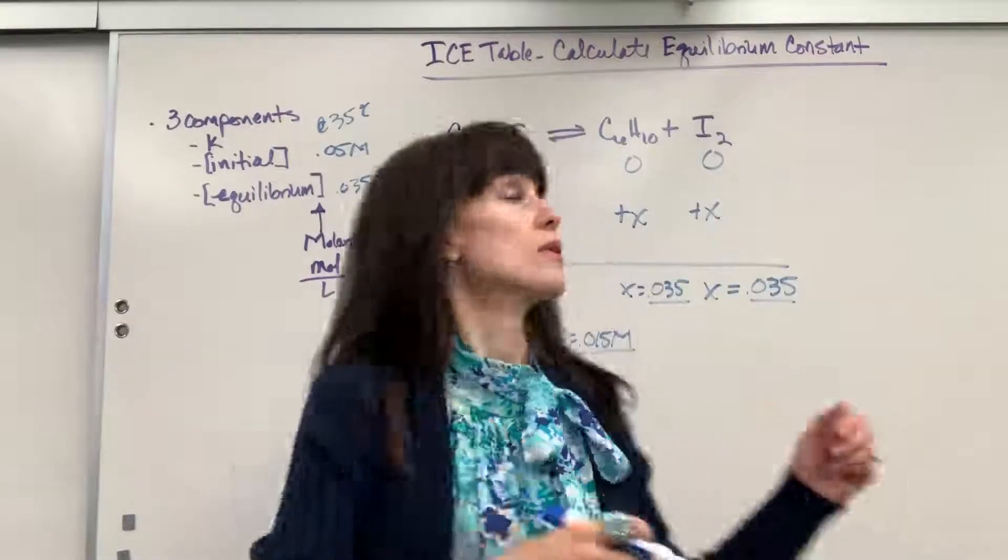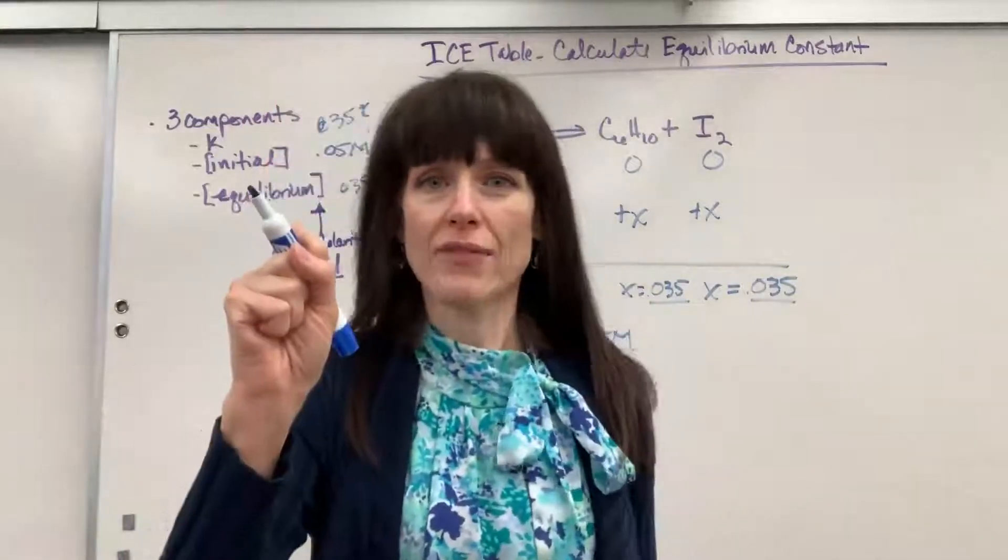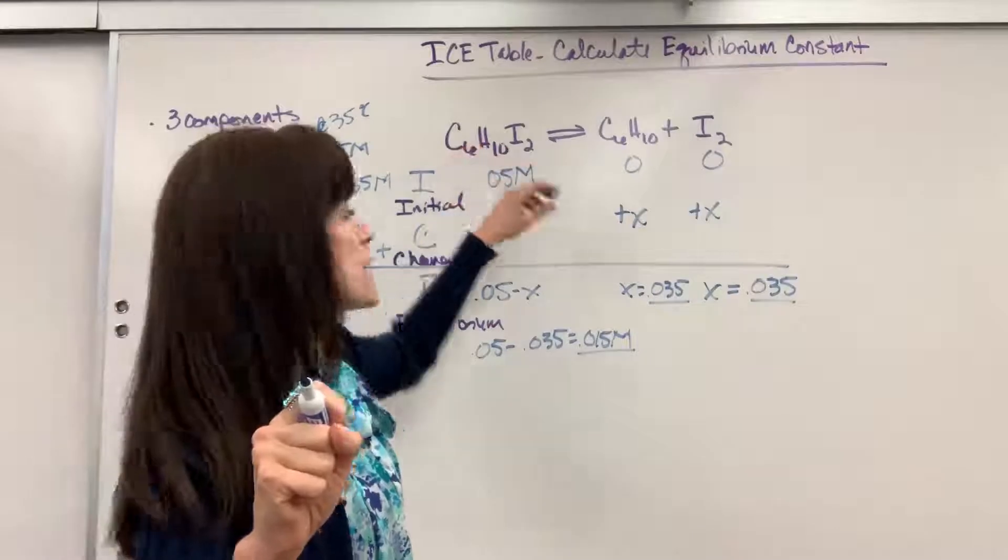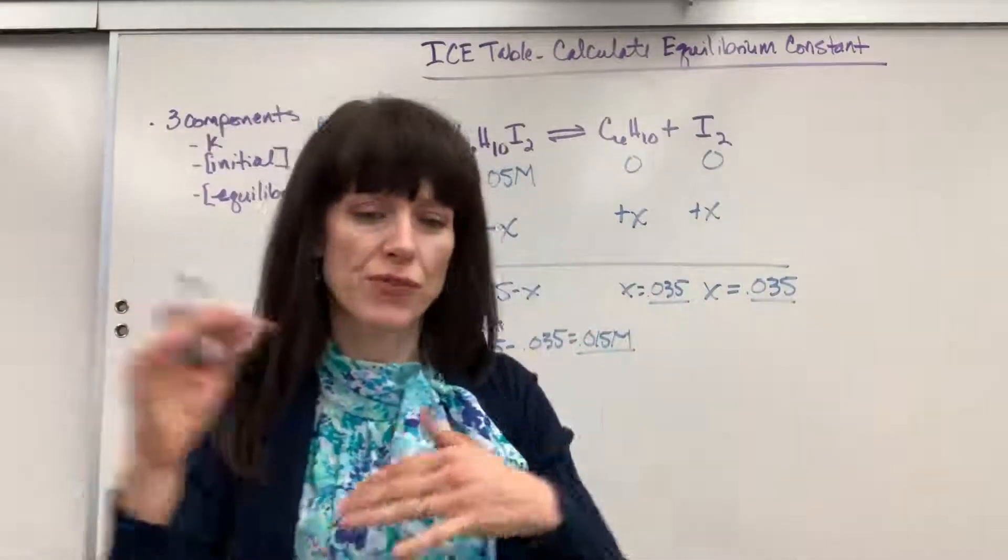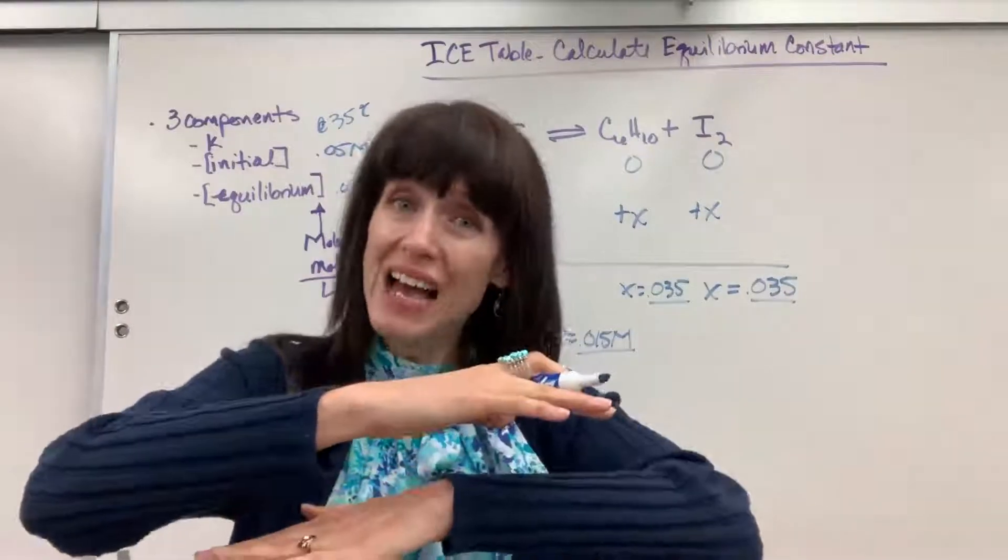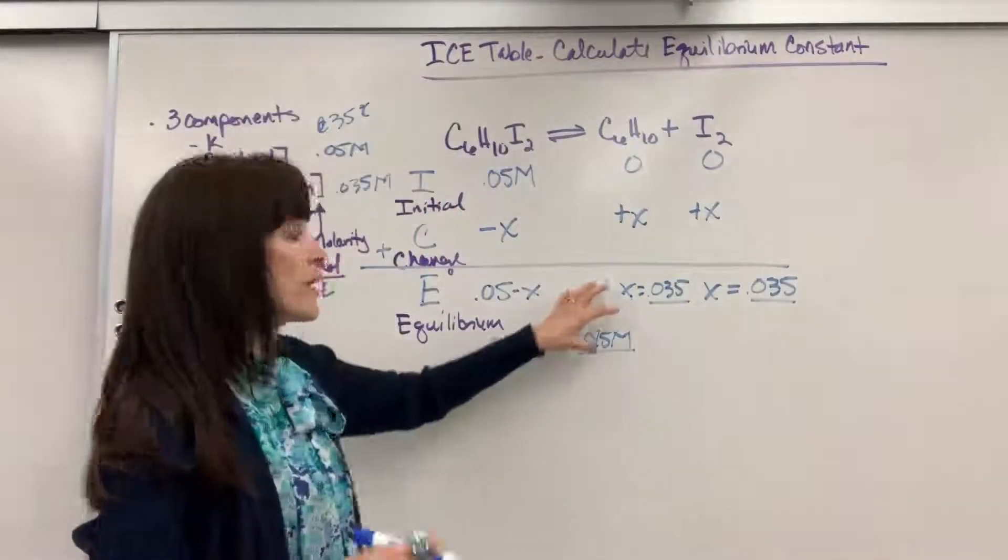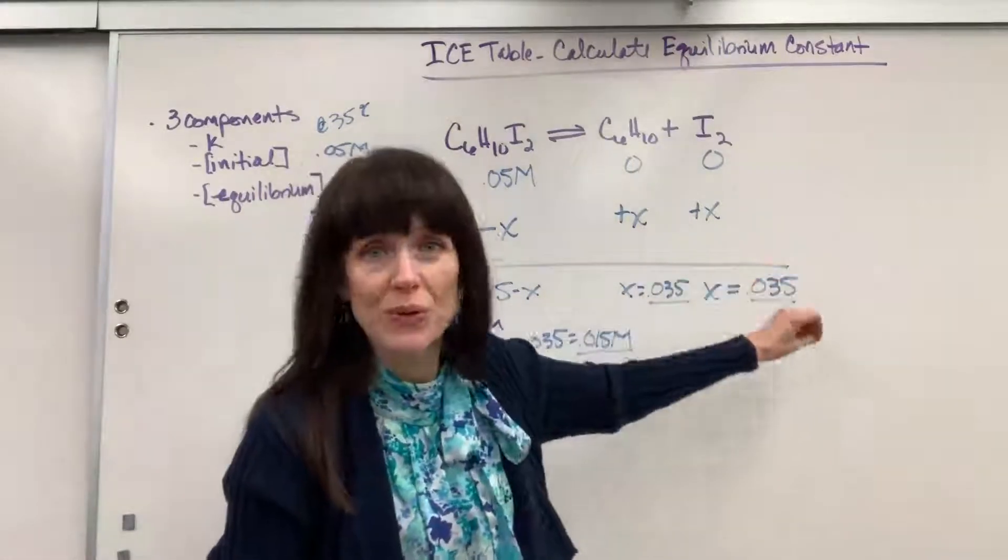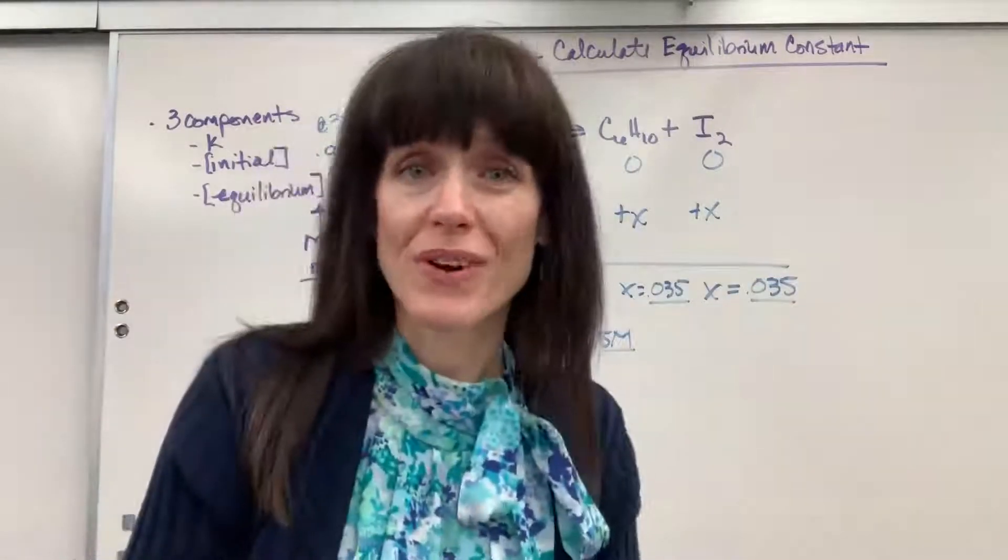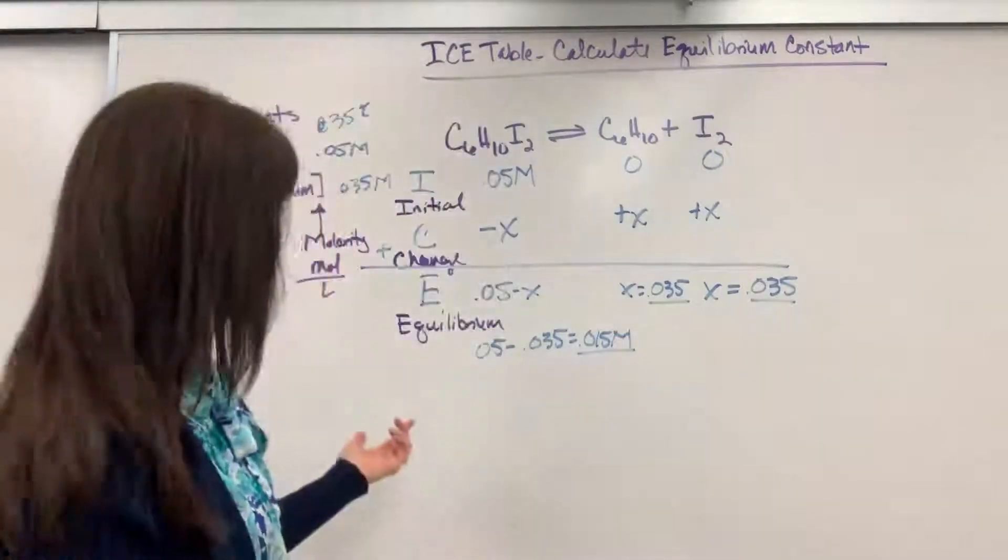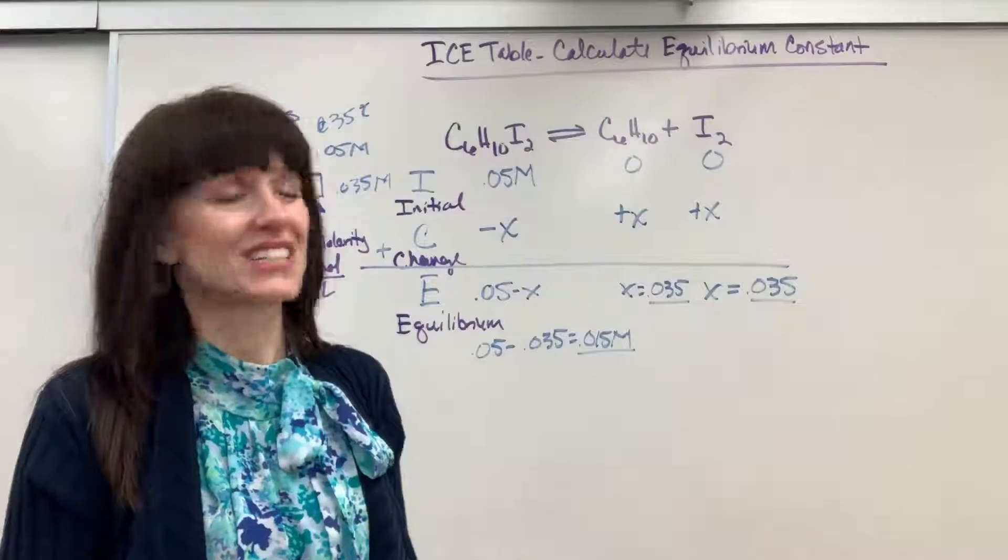So those are our values at equilibrium. So think this through. We start with this 0.05 iodine compound, this cycloiodine right here. It reacts, goes forward, reverse, forward, reverse. Finally, when it reaches that beautiful equilibrium, what's left is 0.015 of the reactant and then 0.035 of each of those products. So now we can find K because we have all of the equilibrium concentrations.